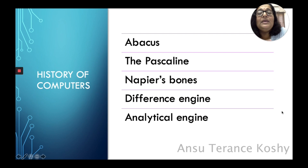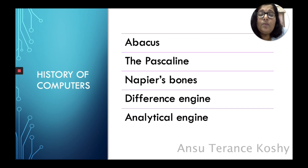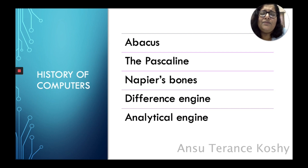When you talk about the history of computers you need to know about five things: what is an abacus, what is the pascaline, what is Napier's bones, what is the difference engine, and what is an analytical engine. That is what we are going to primarily discuss today.